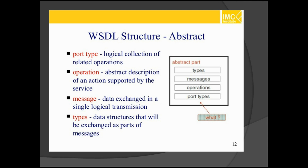There are two different types of operations: one-way communication and request-response communication. In one-way communication, only a request happens but no response. In request-response, we get both — it is a two-way communication.